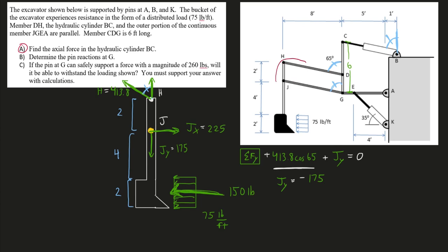The next question is where do we go? Looking at member JGEA, let's see how many unknowns we got. We know the forces at J. At G we have two unknowns from the upper member CDG. At E we have one unknown from the two-force member. At A we have two unknowns from the pin. So we have five unknowns here, so we don't want to analyze this system yet. Therefore, we will go to HD.